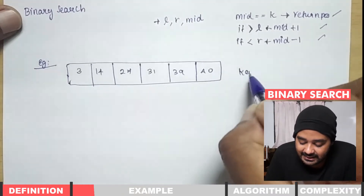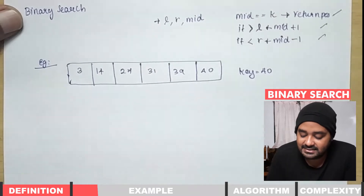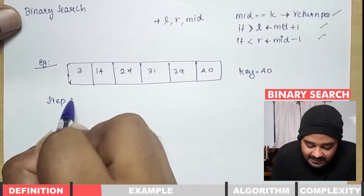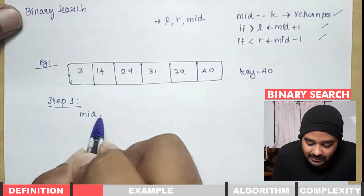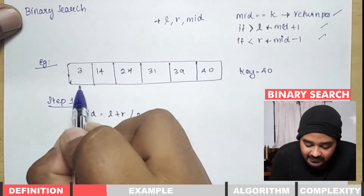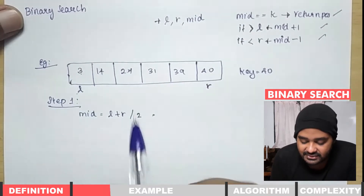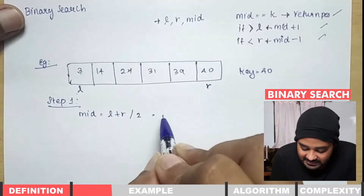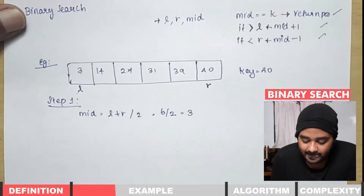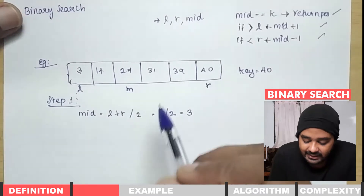We consider the key element to be searched as 40, the last element. In step 1, we calculate the mid value as L plus R divided by 2. With 6 elements (indices 1 through 6), we get 6 divided by 2 equals 3, so the third element — 27 — is our mid element.